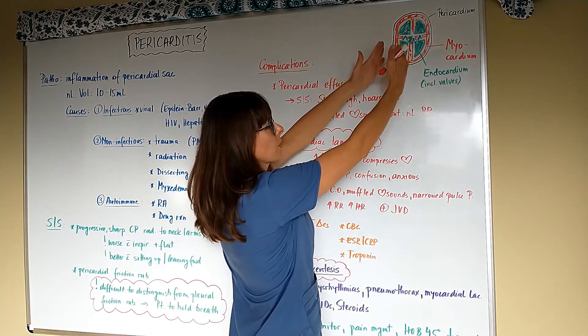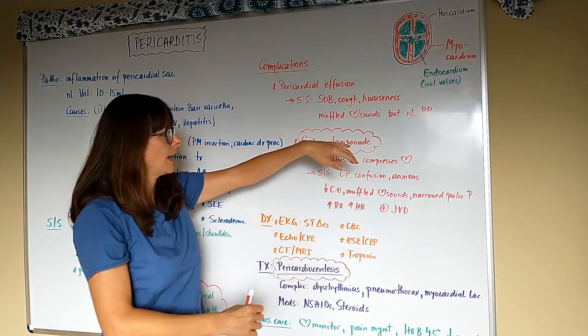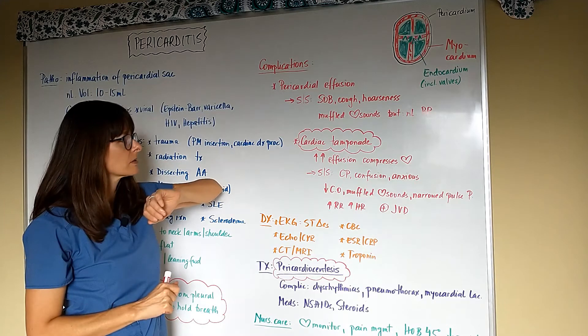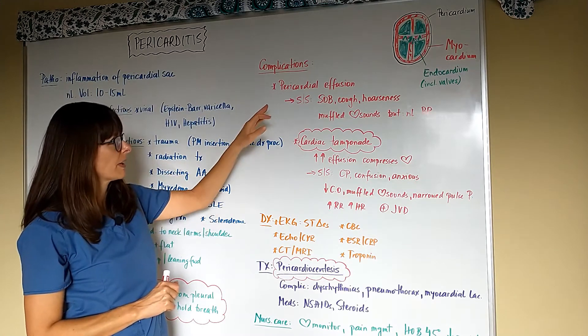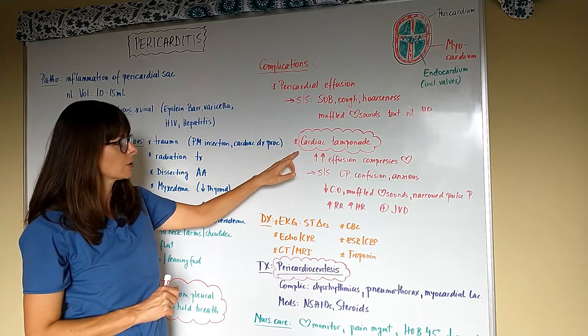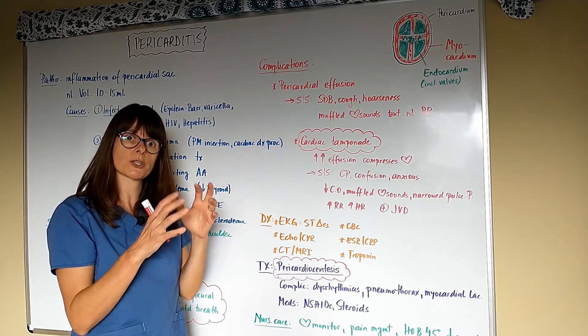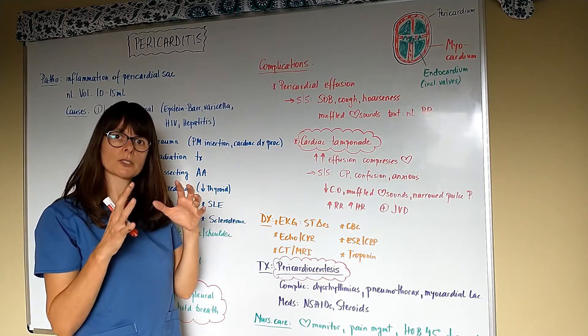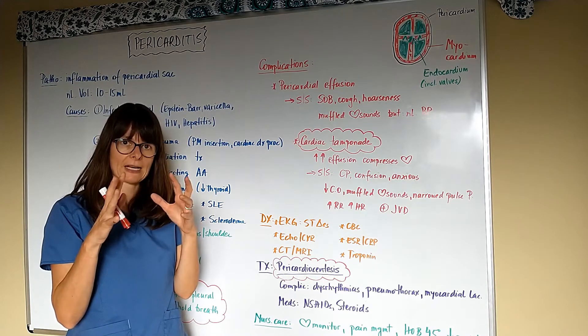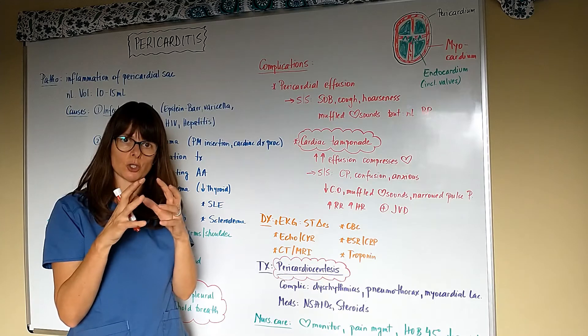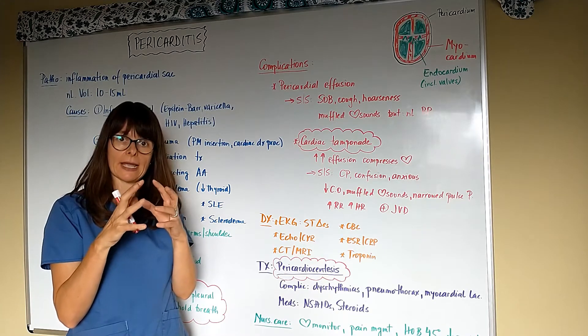Now the pericardial effusion can lead to what's called a cardiac tamponade. Tamponade just means pressure. So now we have so much fluid in that pericardial sac accumulating that it constricts the heart's ability to contract and expand and produce the cardiac output.